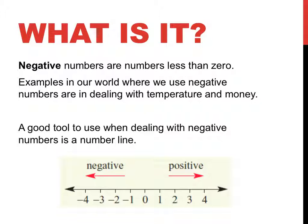A really good tool when dealing with negative numbers is a number line. Now you'll notice this number line below I've drawn. It's just a line. It has evenly spaced intervals. It has a zero in the middle and it goes negative to the left, positive to the right.